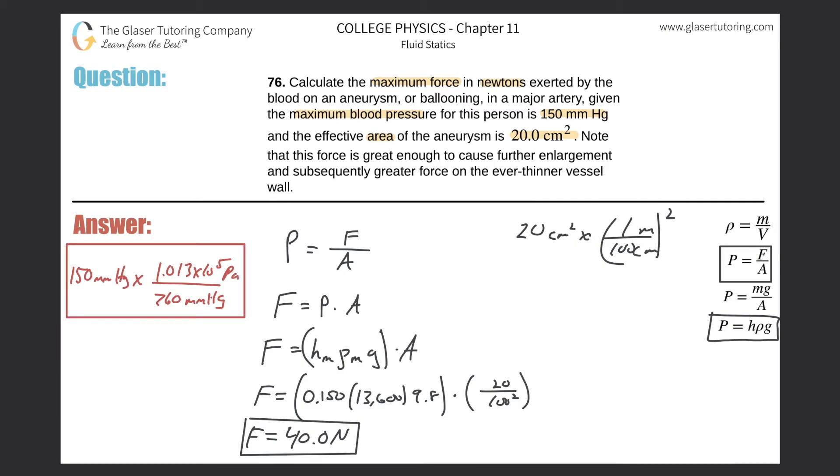Why don't you calculate this - humor me for a second. Calculate that 150 times 1.013 times 10 to the fifth, divide that by 760, so you get an answer of almost 20,000, right. I'm rounding a little bit, but almost 20,000.